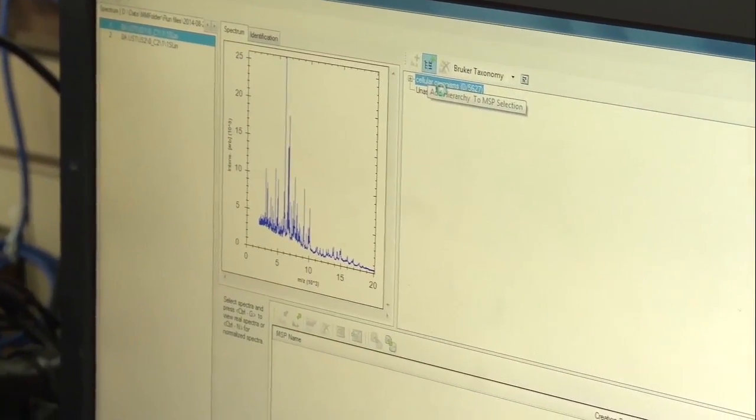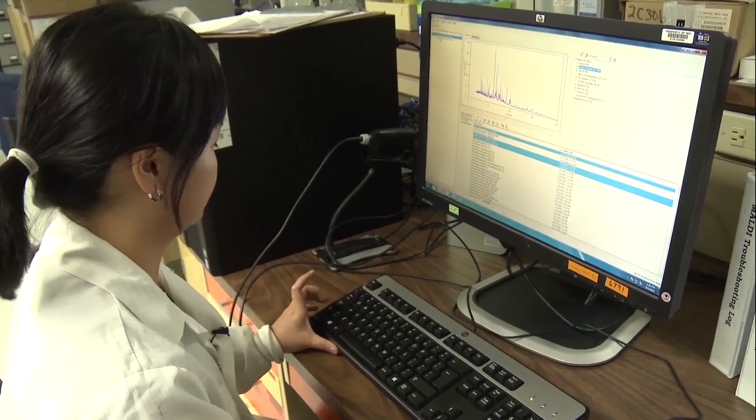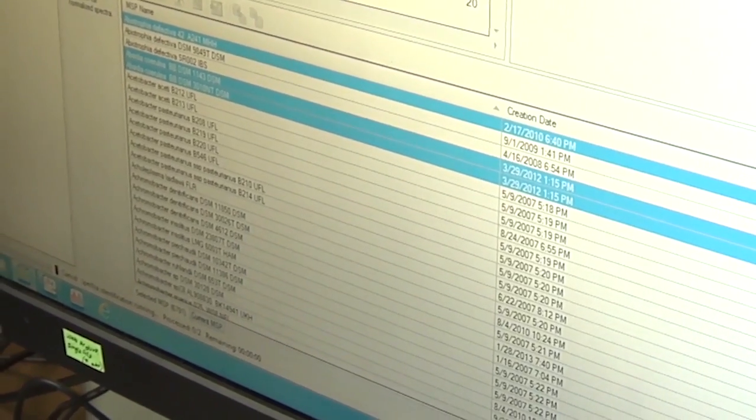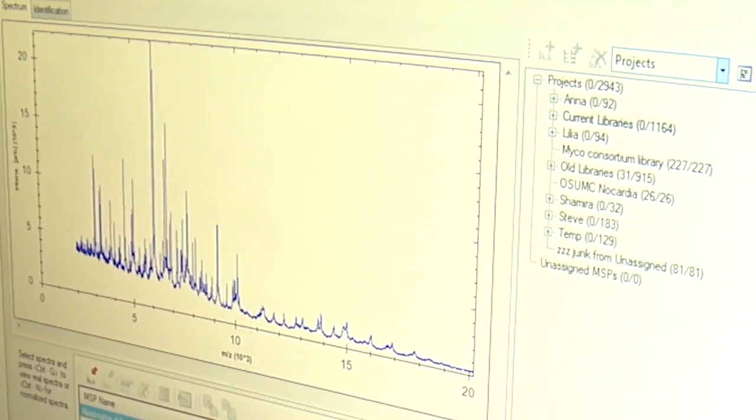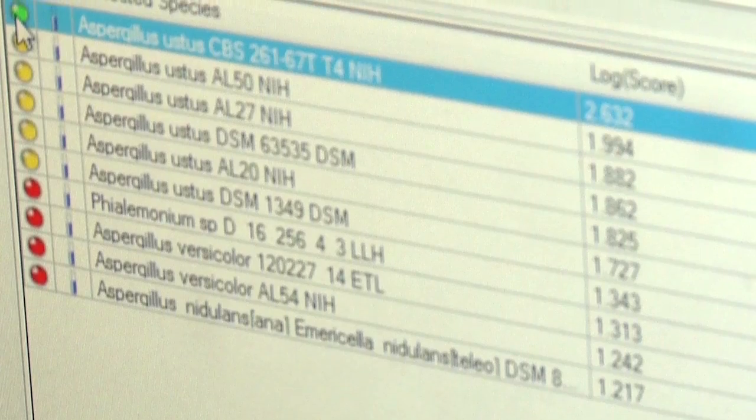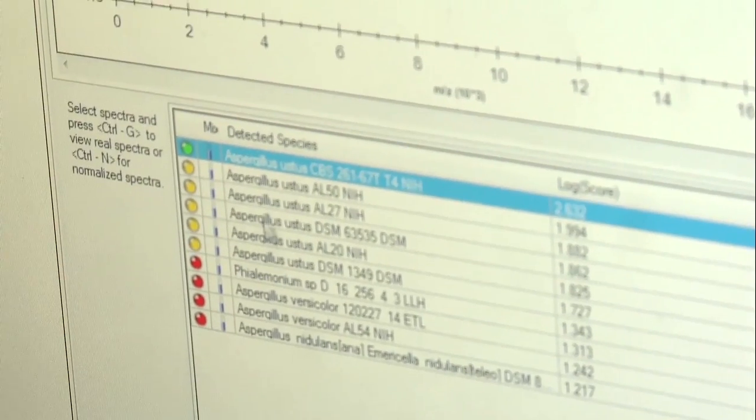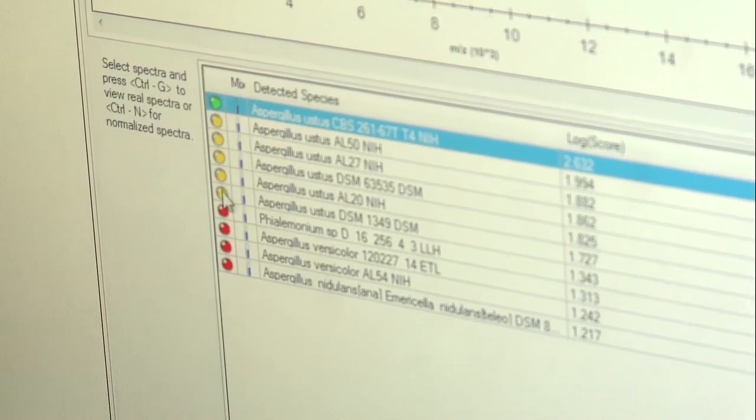We run it against the entire database. The mold one is the one that I developed. We're going to highlight these guys and hit play. Here's our results, listing the top 10. Green means it scored greater than two. Three is the maximum.